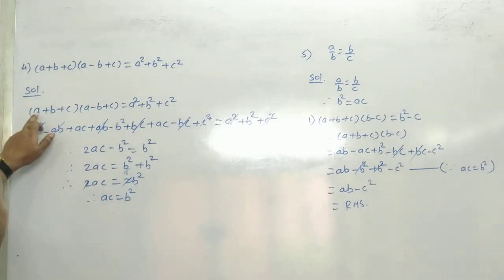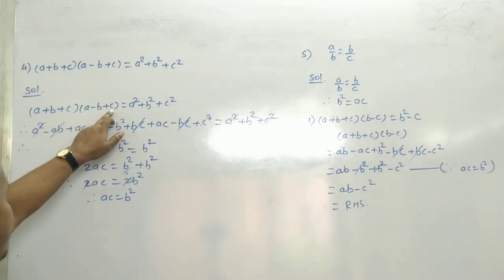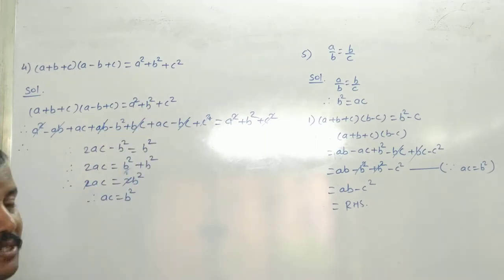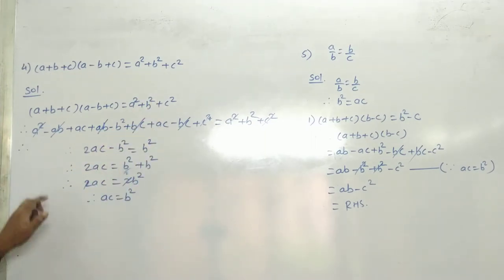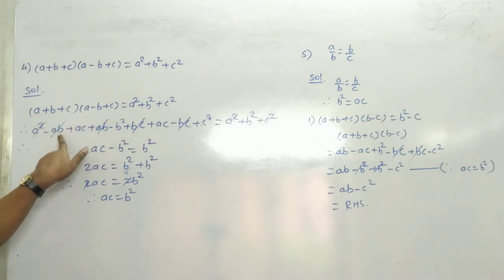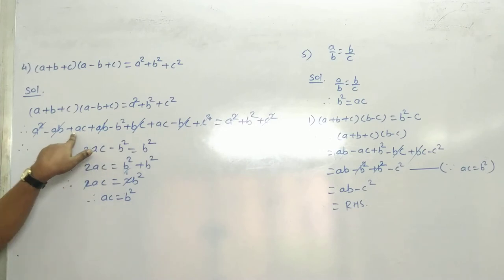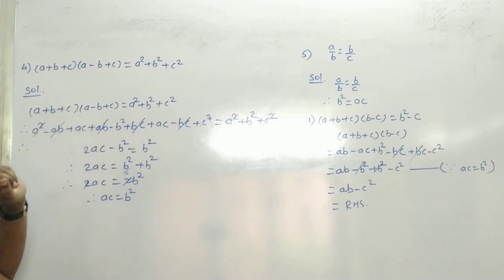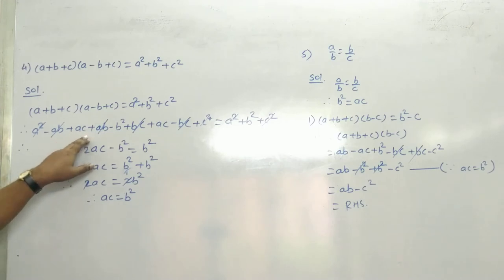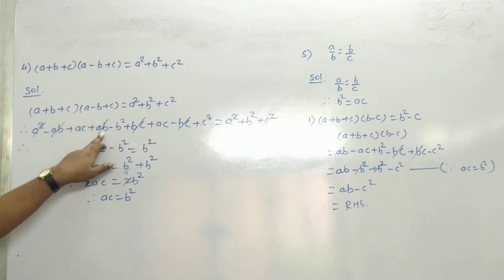So, see now (A + B + C)(A - B + C) is equal to A square plus B square plus C square. Now multiply: A into A = A square, A into minus B = minus AB, A into C = AC. फूरे bracket को multiply किया तो क्या आया? A square minus AB plus AC.